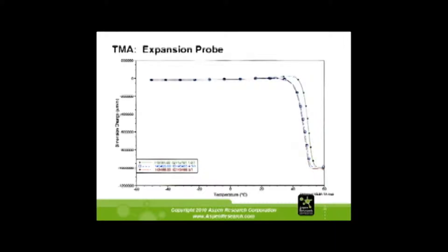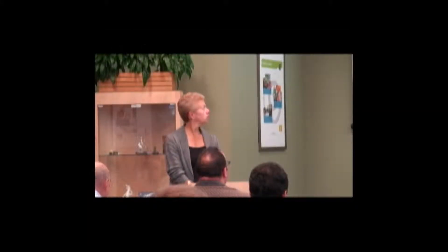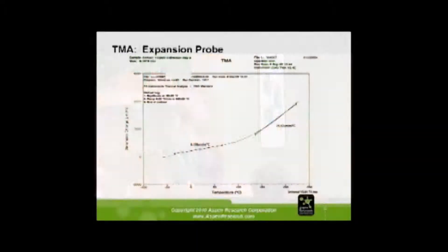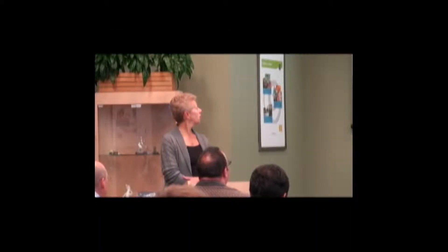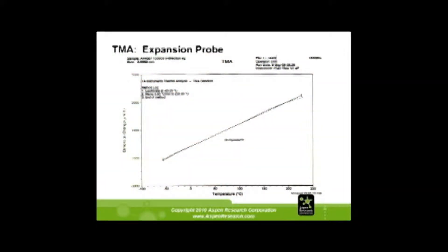With the expansion probe, you can see everything was similar until one sample expanded greater than the other two. When measuring over a slope — a range of temperatures — you can fit two flat lines, and the glass transition is identified where those two lines intersect. Right around 100 degrees is where the glass transition is in this example; above it, the sample decreases in dimension faster. This sample was run from minus 50 to 225 degrees, showing a consistent slope throughout.